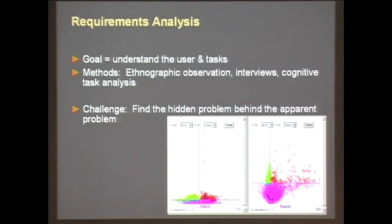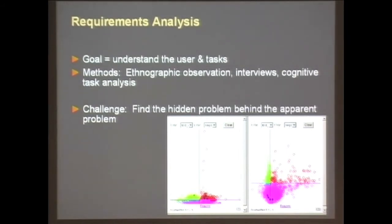You want to observe and really get inside their head to understand their thought processes. If you can do that, you can start thinking about how to design tools that support or optimize those thought processes. We sometimes call this cognitive task analysis, to distinguish it from the human factors realm where people do physical tasks. Here we're observing people doing mental tasks — much harder to observe. The really hard part is that when you first start doing this, you'll find an easy problem to solve, and you think you can solve it. The tricky thing is finding the hidden problem behind that obvious one.